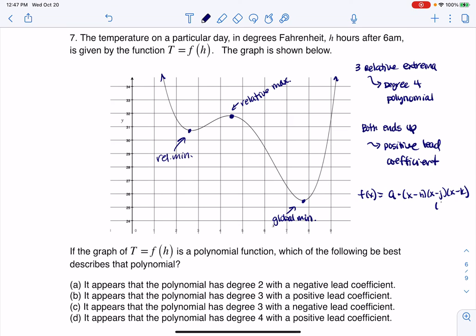I need one more, x minus... oh, I missed i, x minus i, I'm trying to think of those letters. I would need at least four of these factors to get my degree four polynomial. And you always have some coefficient out in front, and it has to be positive, because again, both ends are up.